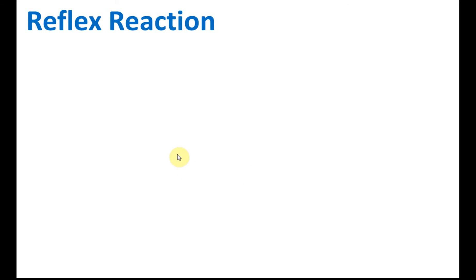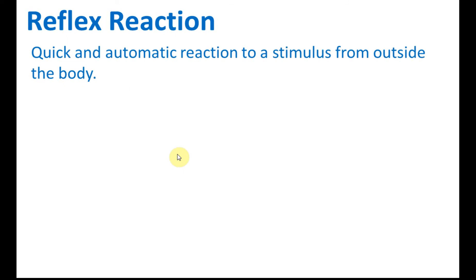What is a reflex reaction? A reflex reaction is a quick and automatic reaction to a stimulus from outside of the body. It usually occurs in emergency cases — for example, your hand accidentally touches a very hot object. Your body needs to respond as fast as possible to protect your hand from severe injury. It is very quick, very fast, and automatic. It is not controlled by your consciousness; it is controlled by your spinal cord.